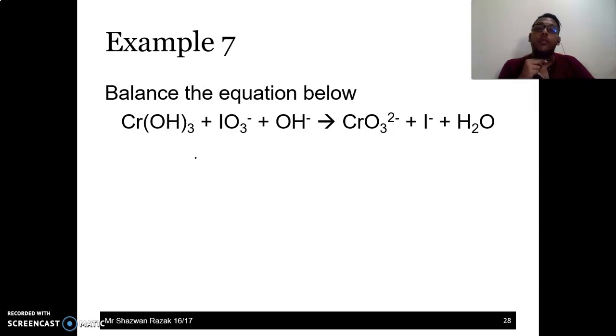How to do this? The first thing we have to do is split it into 2. This is Cr(OH)₃ becomes CrO₄²⁻. And then IO₃⁻ becomes I⁻. What about OH⁻, H⁺, or H₂O? If it's given in the original equation, ignore it. Ignore it. Now, how to balance this? It is very easy. Remember, still MOHAIR.